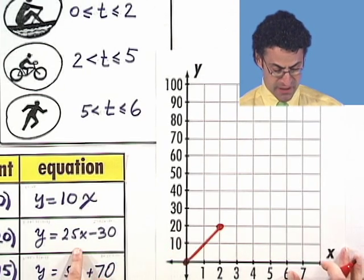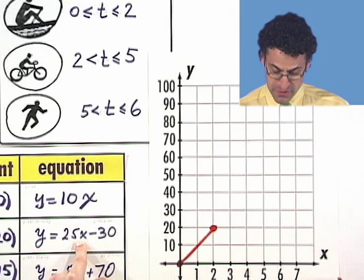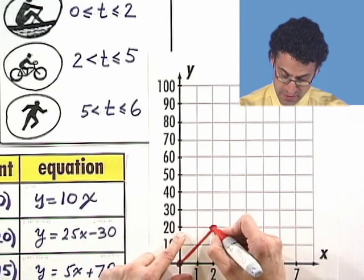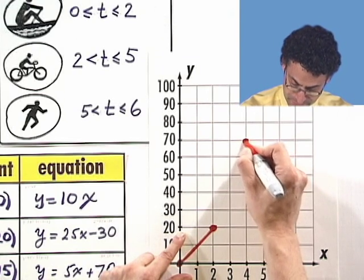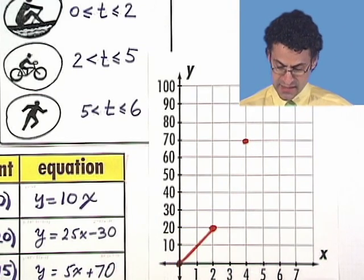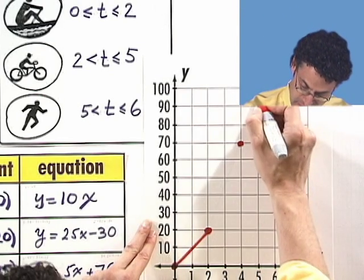Then after that, what happens? Well, now my slope increases quite a bit. 25 over 1, which is the same thing as 50 over 2. So 50 over 2, I add 50, go over 2, and I'm right here. And I keep doing that until I get to 5.